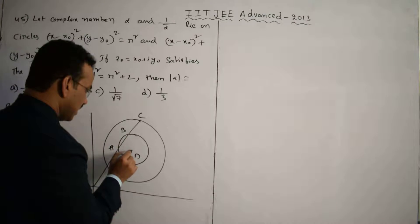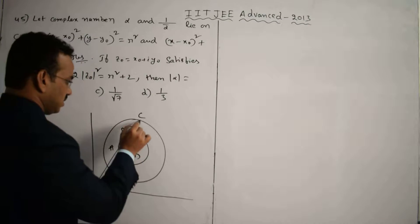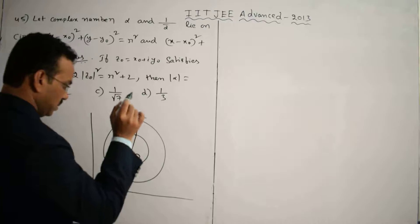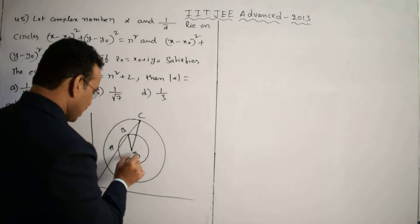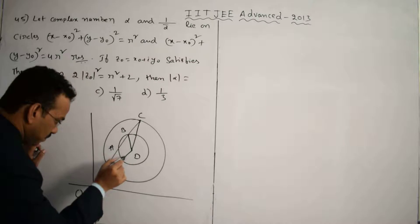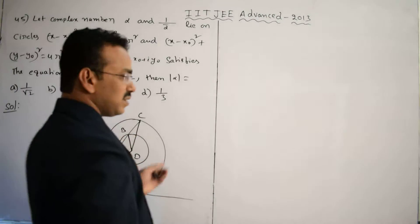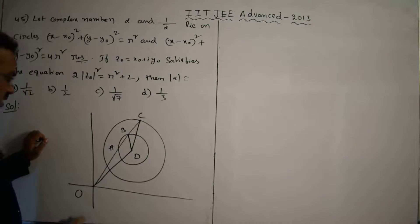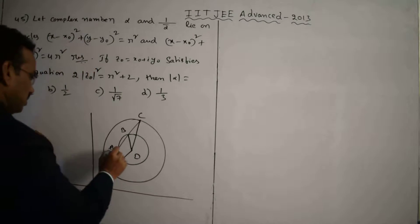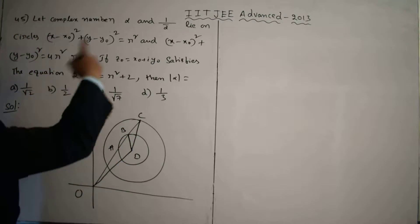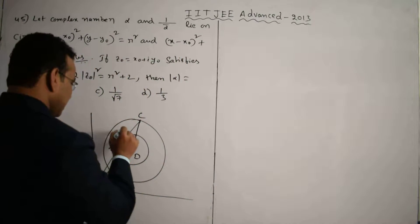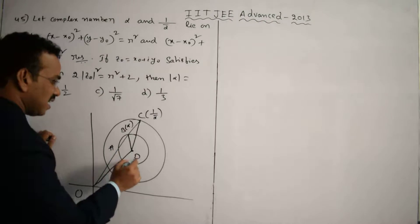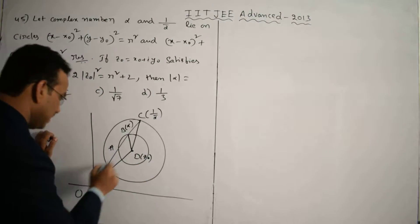Join the center O to point b, and similarly join the center O to point c, and also join O to d. So α lies on the inner circle - mark this as α. And 1/ᾱ lies on the outer circle - mark this as 1/ᾱ. The center is z₀.